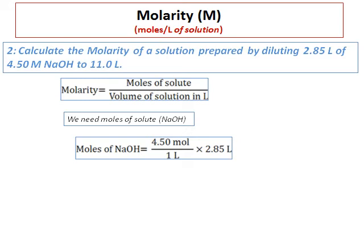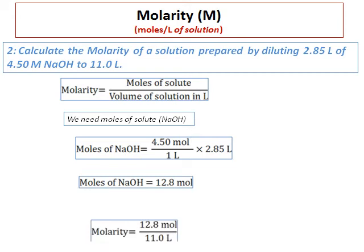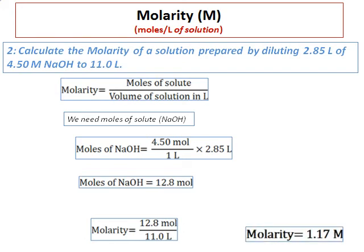Multiplying 4.50 mol/L by 2.85 liters, the volume units cancel and we get moles of NaOH equal to 12.8 moles. Now molarity equals 12.8 moles divided by 11.0 liters, which equals 1.17 M. This illustrates that the mass of solute is not always given — this is a dilution-type problem where the initial molarity is provided.